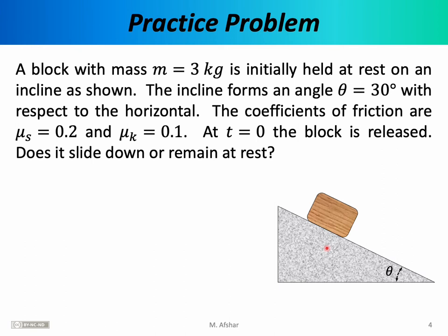To answer this we adopt a rotated coordinate system aligned to the incline: x is parallel to the surface and y is perpendicular to it. The dashed horizontal line and the incline base are parallel, so the incline surface is a transversal — meaning the angle between the weight vector and the y-axis is also theta, 30 degrees, by the alternate interior angles theorem.